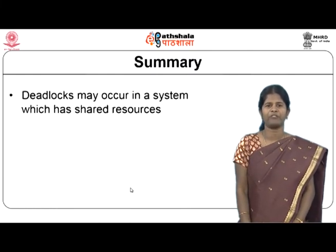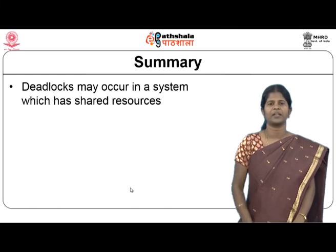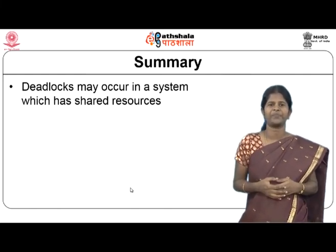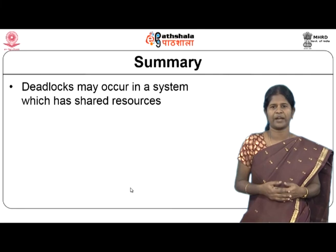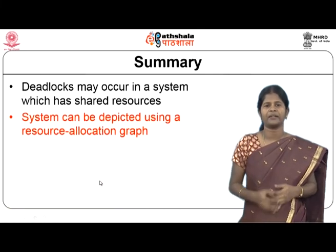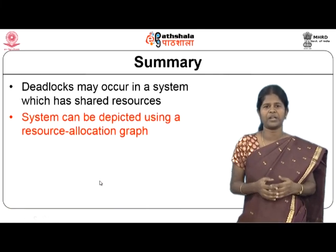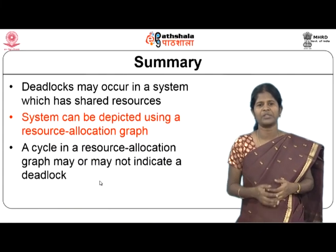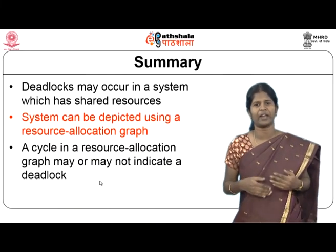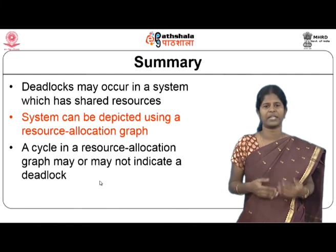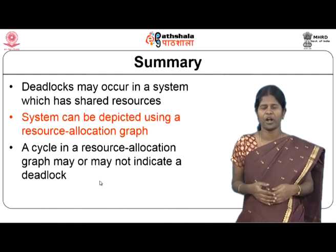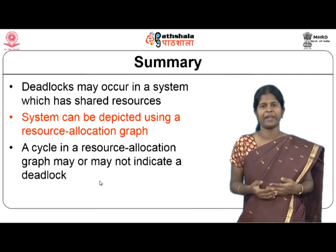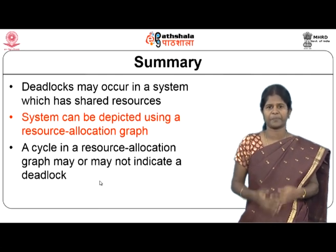In summary, deadlocks may occur in systems with shared resources. A system's state can be depicted using a resource allocation graph, which can be used to determine whether a deadlock exists. A cycle in a resource allocation graph may or may not indicate a deadlock, depending on the number of resource instances available.